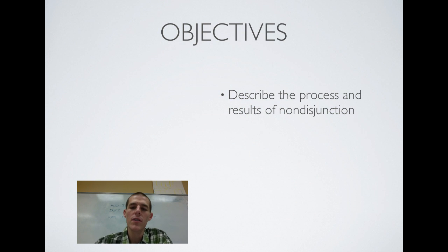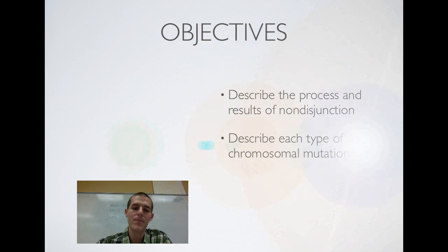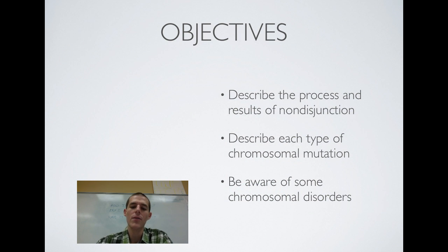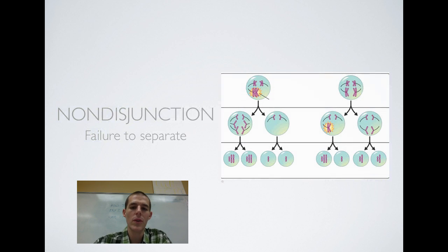First, be able to describe the process and results of nondisjunction. Second, describe each type of chromosomal mutation. And finally, be aware of some chromosomal disorders. That's what we've got to talk about. Let's go ahead and get going with it.